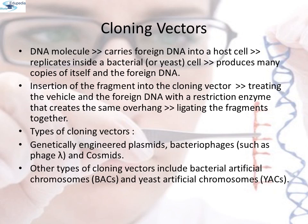Cloning vectors: a DNA molecule that carries foreign DNA into a host cell replicates inside a bacterial or yeast cell and produces many copies of itself and the foreign DNA. The insertion of a fragment into the cloning vector is carried out by treating the vehicle and foreign DNA with a restriction enzyme that creates the same overhang, then ligating the fragments together. Genetically engineered plasmids and bacteriophages such as phage lambda are the most commonly used. Other types include bacterial artificial chromosomes, or BAC, and yeast artificial chromosomes, or YACs.